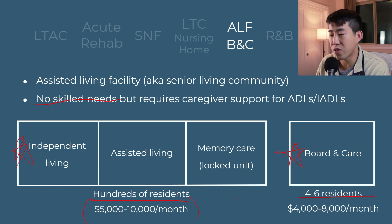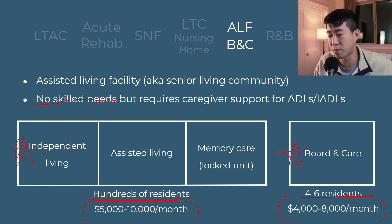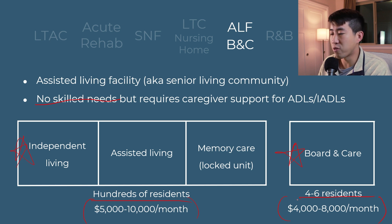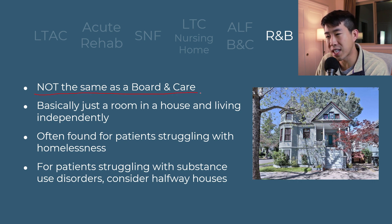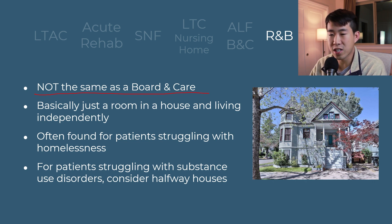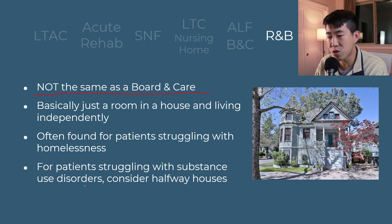In terms of costs, an assisted living facility runs $5,000 to $10,000 a month unless patients have long-term care insurance or supplemental Medicaid coverage. A board and care will probably be a little cheaper, around $4,000 to $8,000 a month. Room and board is completely different from board and care — it's basically just a room in a house where the patient is living independently. Often we arrange these for patients struggling with homelessness. For patients with substance use disorders, a halfway house is directed toward getting people through rehab and overcoming their addictions.